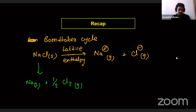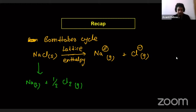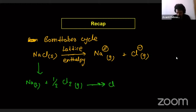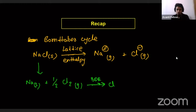After getting the standard forms of the atoms, we convert single atoms into gaseous forms. As Cl₂ is there, we need to break the Cl-Cl bond. We converted half Cl₂ into one Cl atom — this is bond dissociation energy or atomization energy. We are making a single atom out of a molecule.